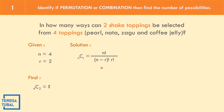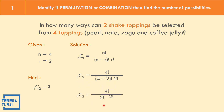Let us use the formula for combinations: N factorial all over the quantity N minus R factorial times R factorial. With N equals four and R equals two, we get: C(4,2) equals four factorial over the quantity four minus two factorial times two factorial. Four minus two equals two factorial, so we have four factorial over two factorial times two factorial. The factored form of two factorial is two times one.